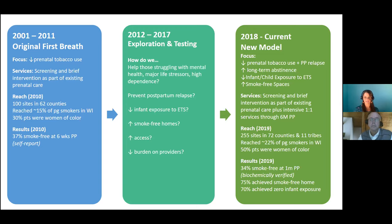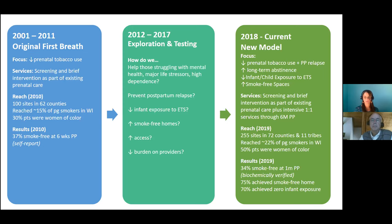It was in this work that we really started to use CFIR to guide this transition. After about six years of testing and research projects, we launched the new expanded model in 2018, focused on reducing tobacco use and postpartum relapse, promoting long-term abstinence, reducing infant and child exposure to tobacco smoke, and including family and household members. Our reach expanded from 100 sites in 62 counties to over 250 sites in all 72 counties and all 11 tribes. We moved from reaching about 15% of pregnant smokers to 25%, with more equitable access — 50% of participants now identify as BIPOC compared to 30% in the old model.